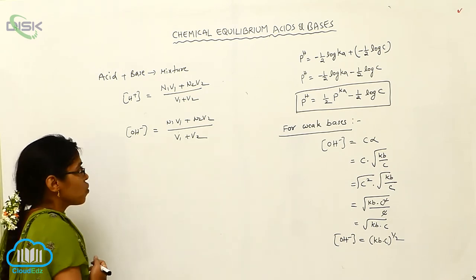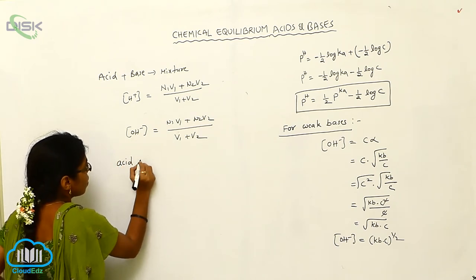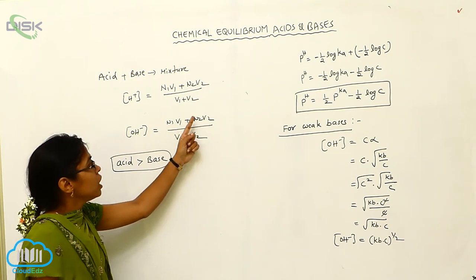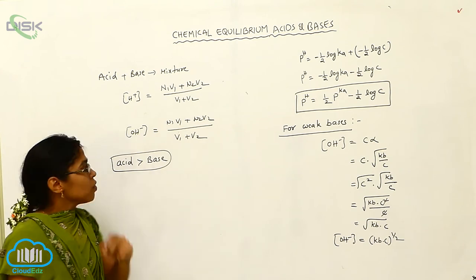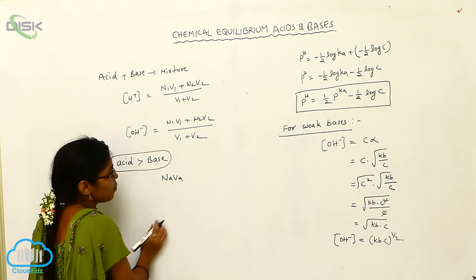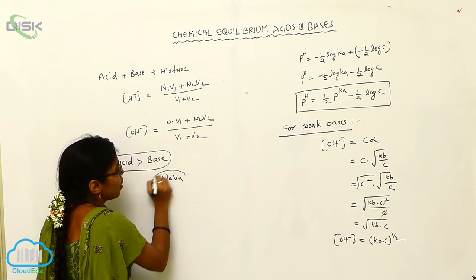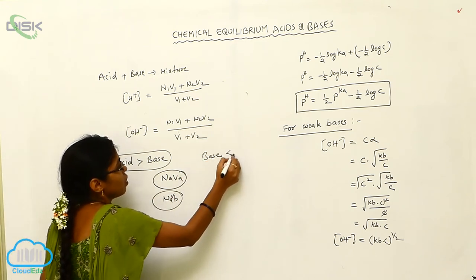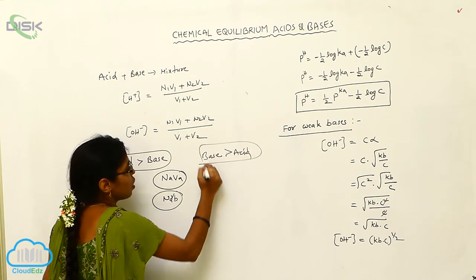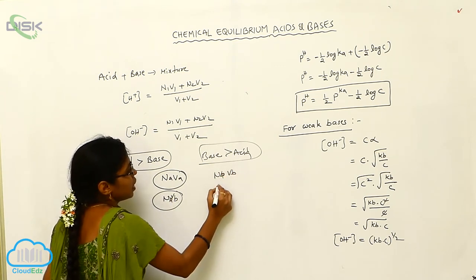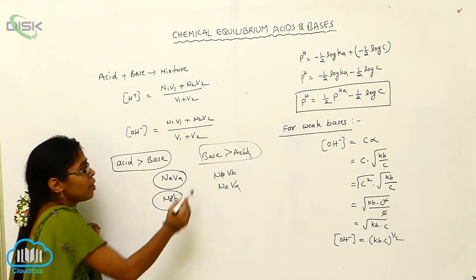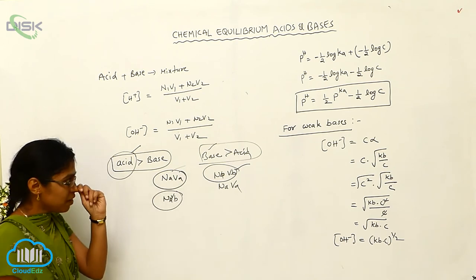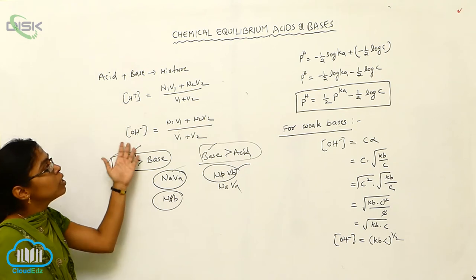In an acid-base mixture situation where the volume of acid is greater than base, use NAVA in place of N₁V₁ and NBVB in place of N₂V₂. When acid is greater, take NAVA first. When base is greater than acid — that is, NBVB is greater than NAVA — take NBVB first. These rules apply for calculating concentrations of H⁺ and OH⁻.